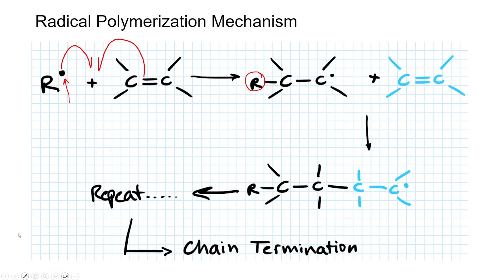When it reacts with another monomer, you're going to have radicals donated, attaching these two groups together, and a radical will form on this end of the molecule. This is essentially the initiation and propagation steps.